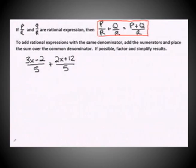So let's take a look at this example: 3x minus 2 over 5 plus 2x plus 12 over 5. So we're lucky we have the situation of common denominators already being there. So we simply begin the process of combining those numerators over the common denominator.